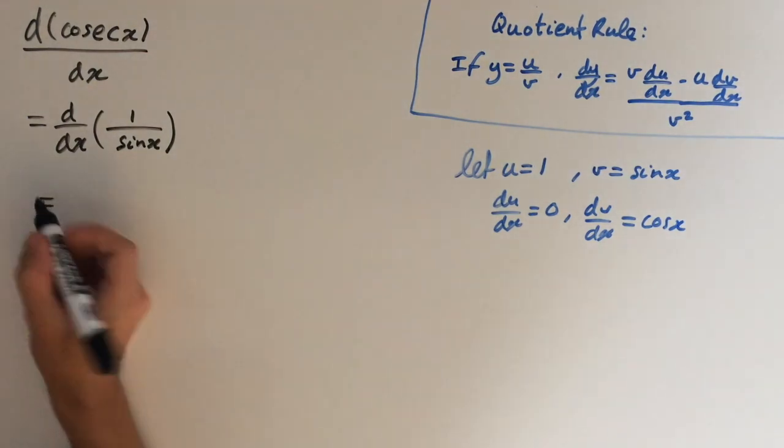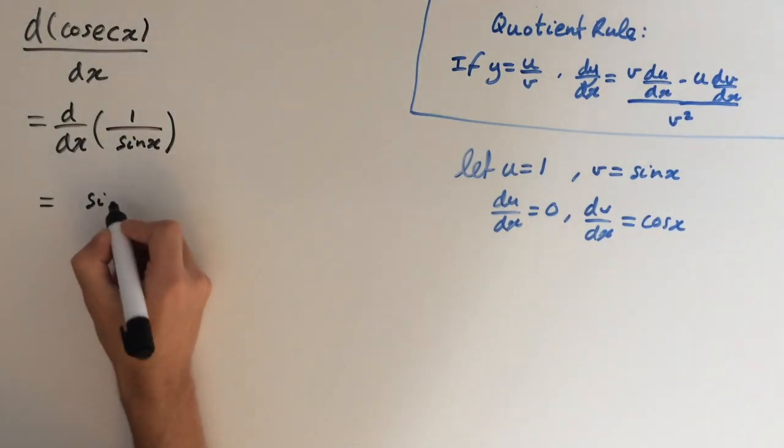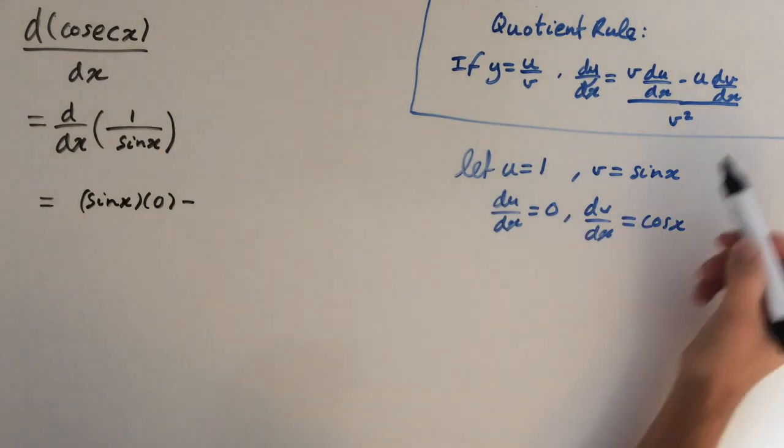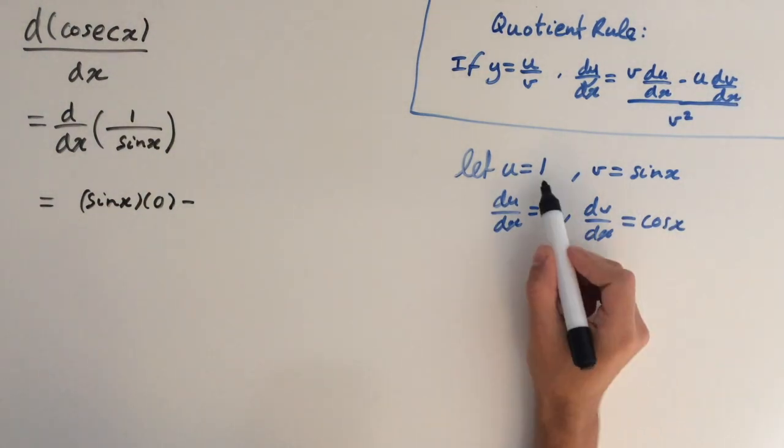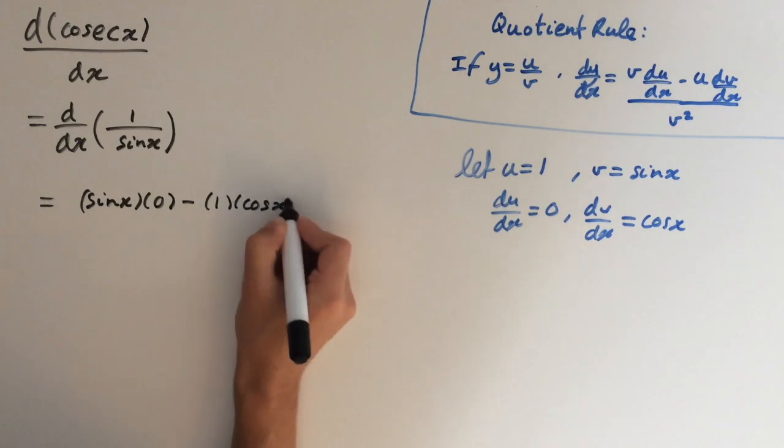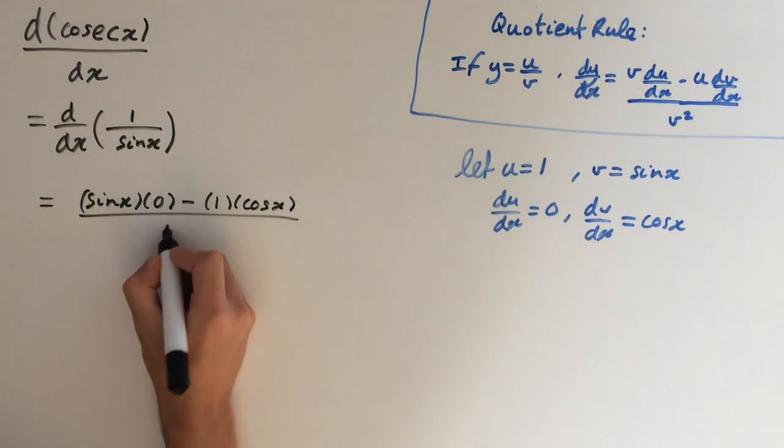So this is going to give us v times du dx, so sine of x times 0, minus u times dv dx, so 1 times cosine of x. This is all over v squared, so sine of x all squared.